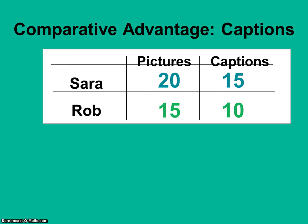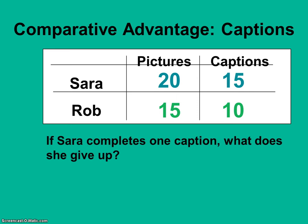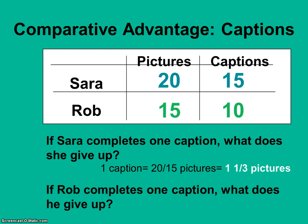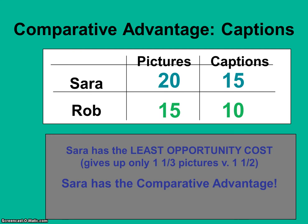Since there are only two individuals and two jobs, if Rob has the comparative advantage in picture cropping, then Sarah is going to have the comparative advantage in caption writing — but let's do the math and prove it. If Sarah writes a caption, she gives up 20/15 pictures, or 1 and 1/3 pictures she could have cropped instead. Rob gives up 15/10 pictures, or 1 and 1/2 pictures, every time he writes a caption. Sarah has the lower opportunity cost — she only gives up 1 and 1/3 pictures — so Sarah has the comparative advantage in caption writing.